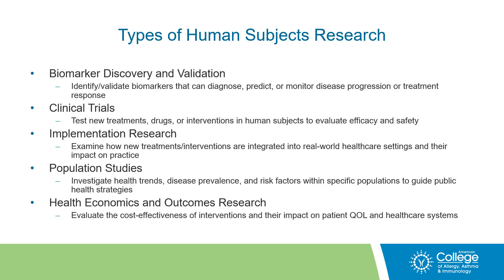There is a variety of types of human subjects research. First, biomarker discovery and validation — these studies identify and validate biomarkers that can diagnose, predict, or monitor disease progression or treatment response. There are also clinical trials, which test new treatments, drugs, or interventions in human subjects to evaluate efficacy and safety.